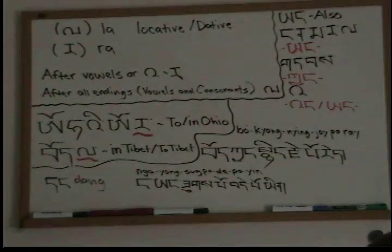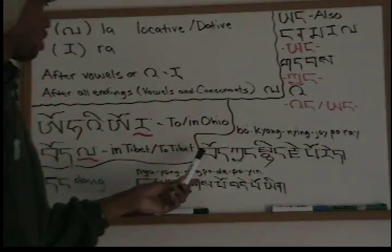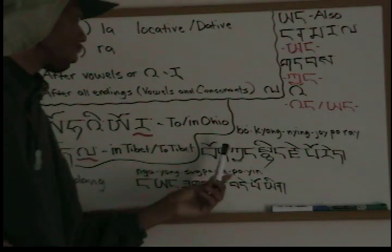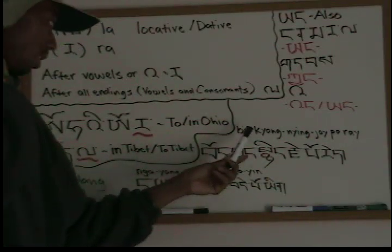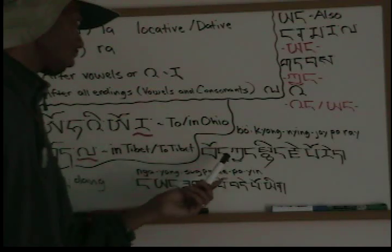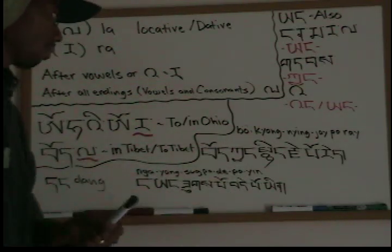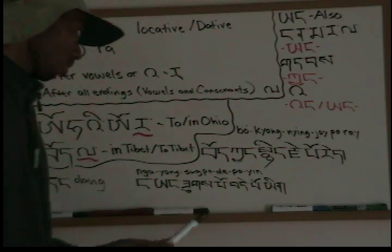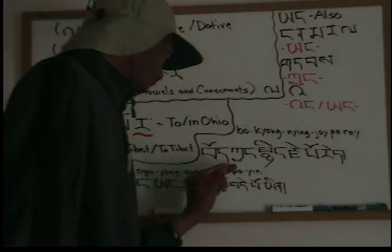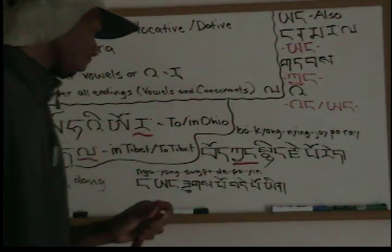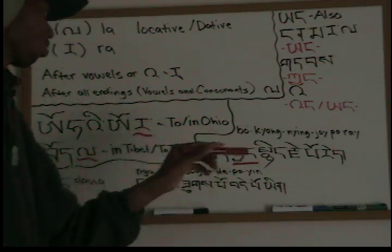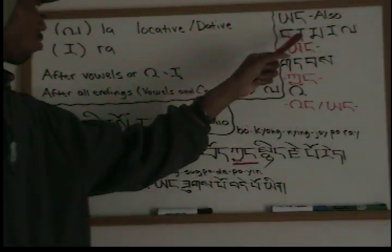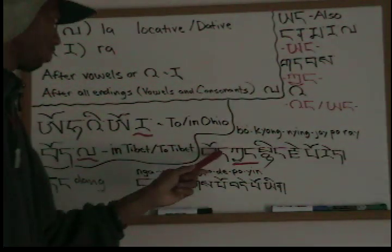Now I'll go through the examples. We have 'Bod kyang nyingje pore' — Tibet is also beautiful or pretty. 'Nyingje pore' means pretty or beautiful. As you can see, 'kyang' is used here because 'Bod' ends with da, and looking at the rule, da takes kyang.